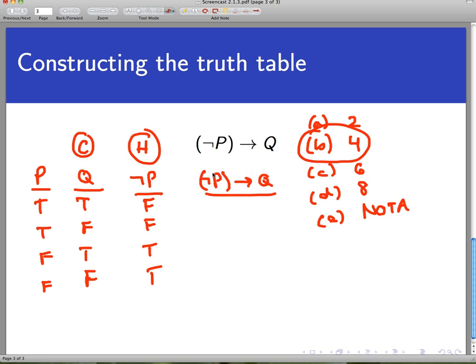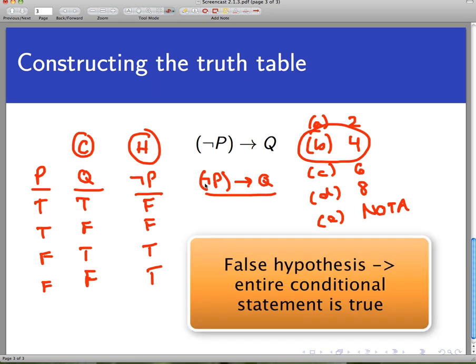Let's go through and write down the truth values for this conditional statement. When the hypothesis is false, remember it's a little counterintuitive, but the entire conditional statement is true. That's the case in the first two lines. The hypothesis is false both times, so I'm going to have true, then true.